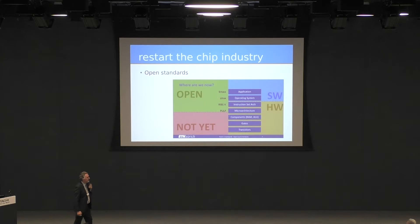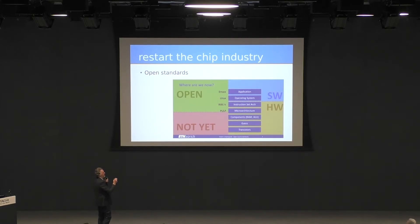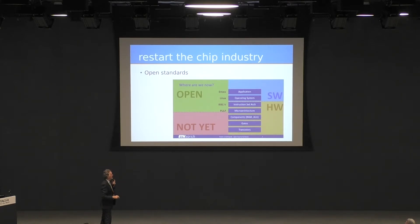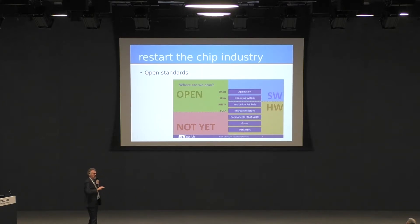What's the status with open source in chips? We do have a lot of open source applications. We have the operating system, Linux. We have the instruction set architecture, RISC-V — it's an open standard. Some implementations of the microarchitecture are open source, like the PULP platform from different universities; some are commercial. But below that — memory compilers, ALU, RAM, cell libraries, transistor models — that's all proprietary. It's owned by the fab or the IP company. There is no open source there. So if you are a university, you are not able to exchange that information.